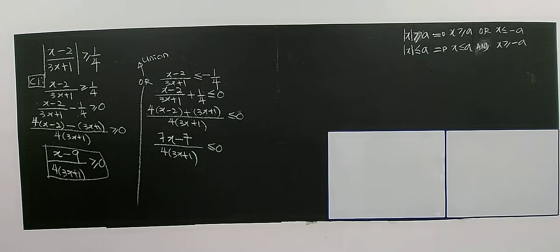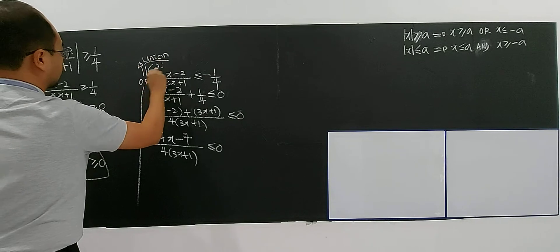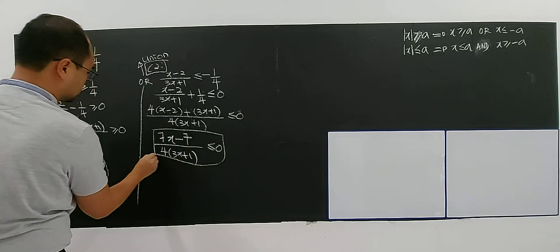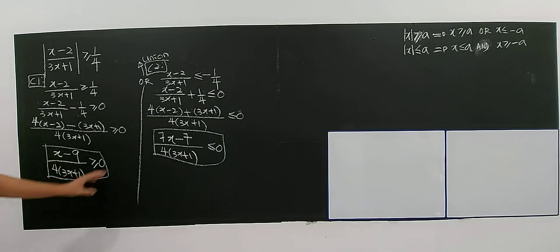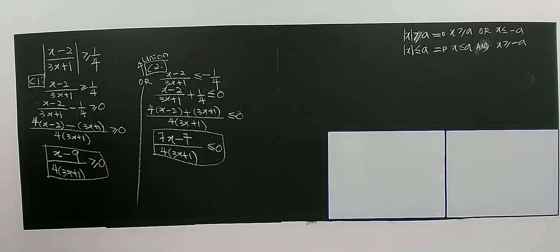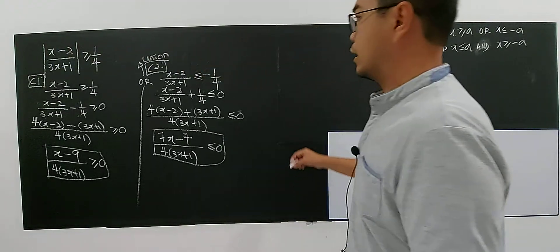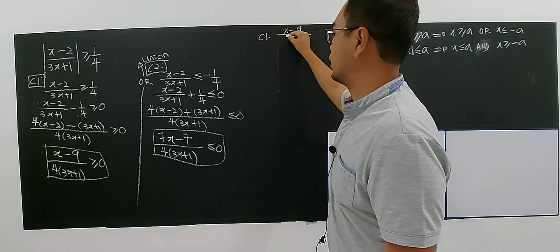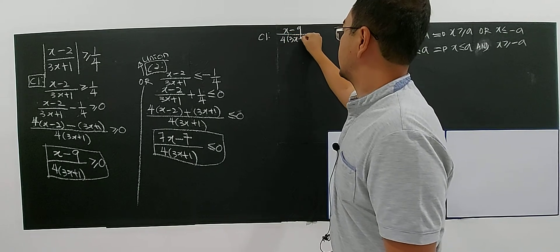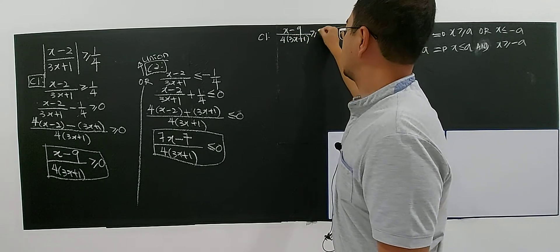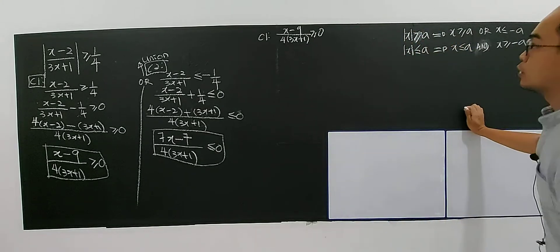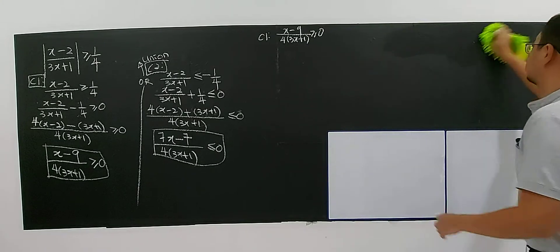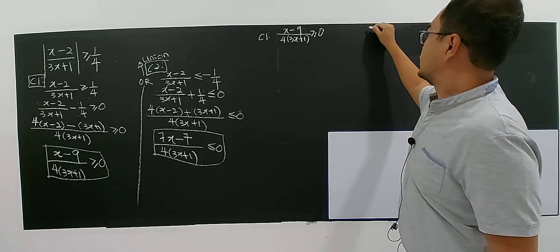After solving, we have two rational inequalities — one for Case 1 and one for Case 2. You have to solve these two rational inequalities separately. Let's look at Case 1: (x minus 9) over 4(3x plus 1) greater than or equal to 0, and Case 2: (7x minus 7) over 4(3x plus 1) less than or equal to 0.